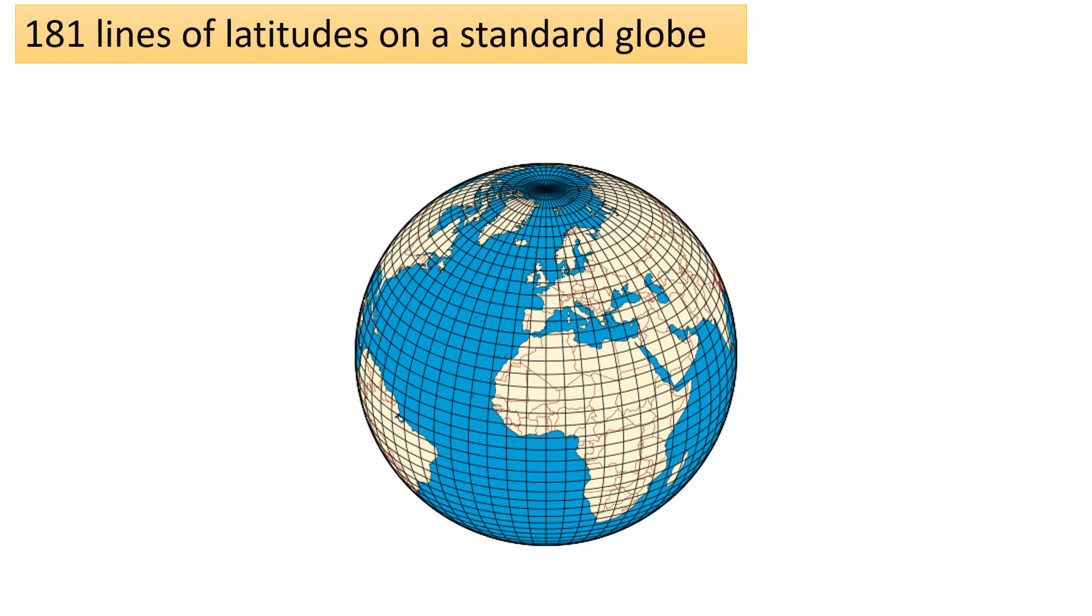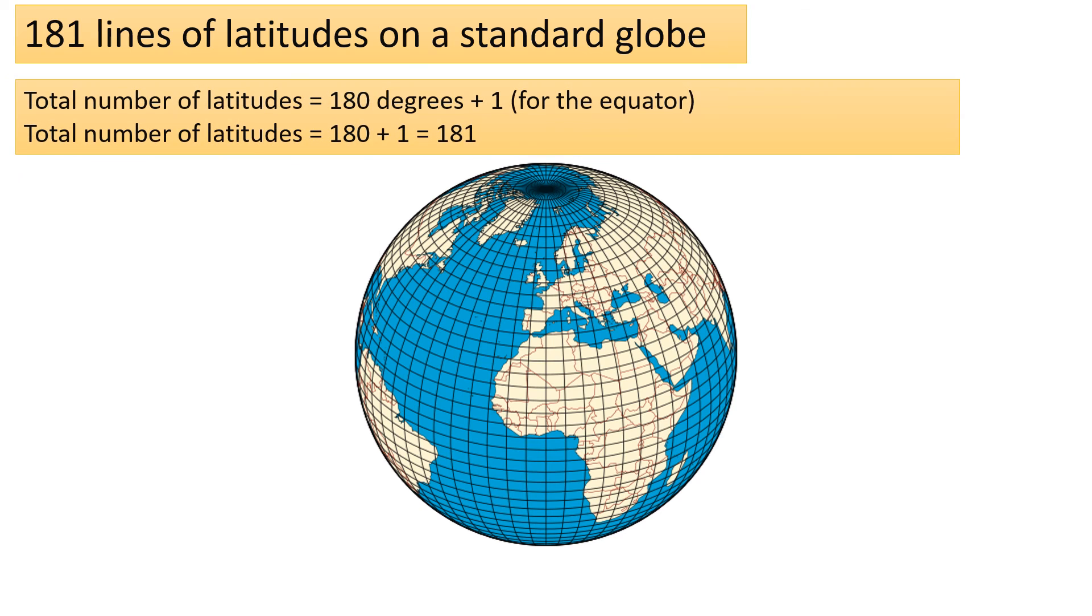Total number of latitude equals 180 degrees plus one for the equator, so total number of latitude is 180 plus one equals 181. Latitudes are used to determine climate zones as well as for navigation and mapping purposes.